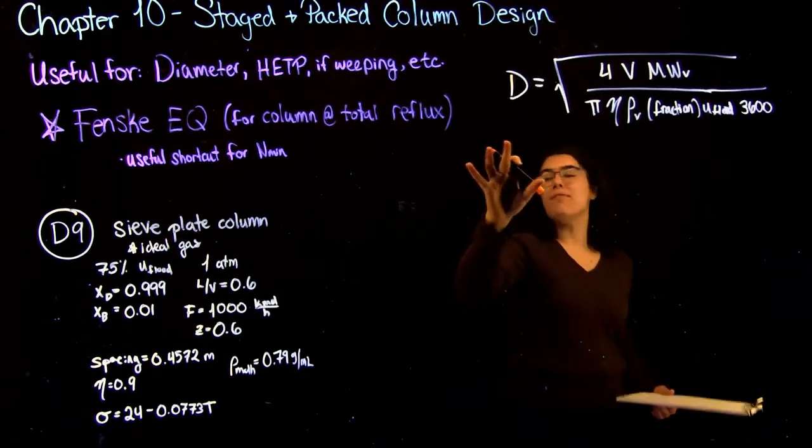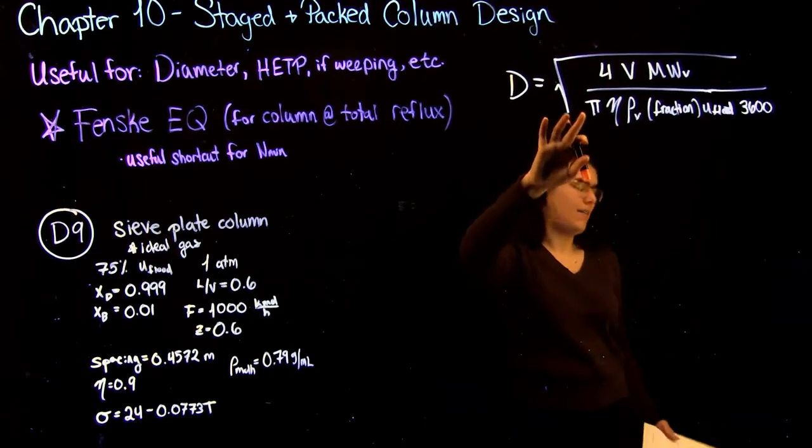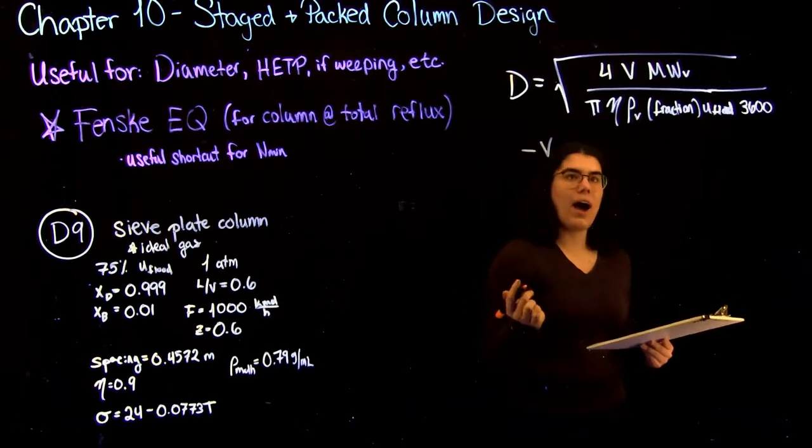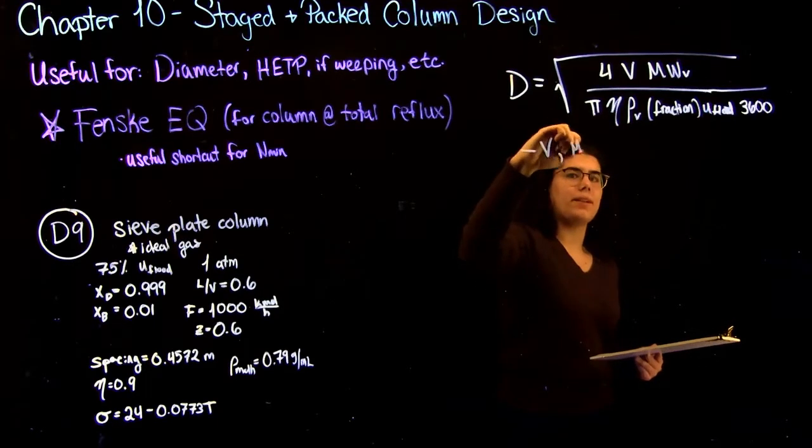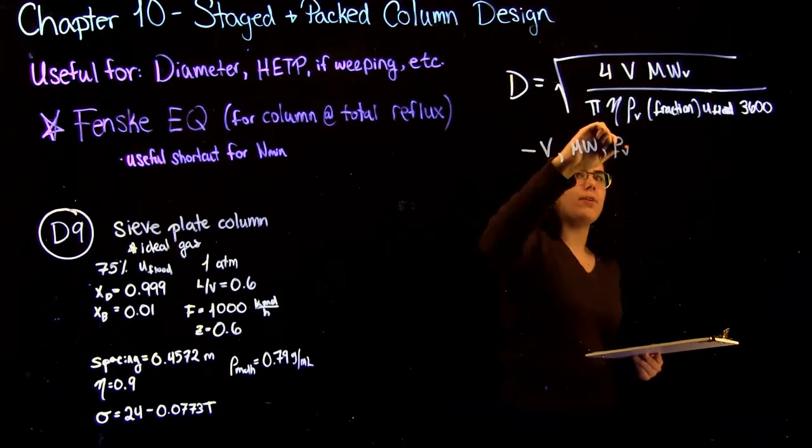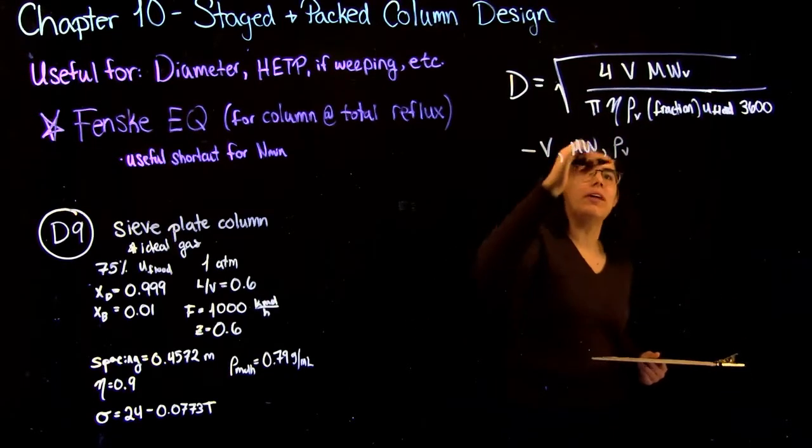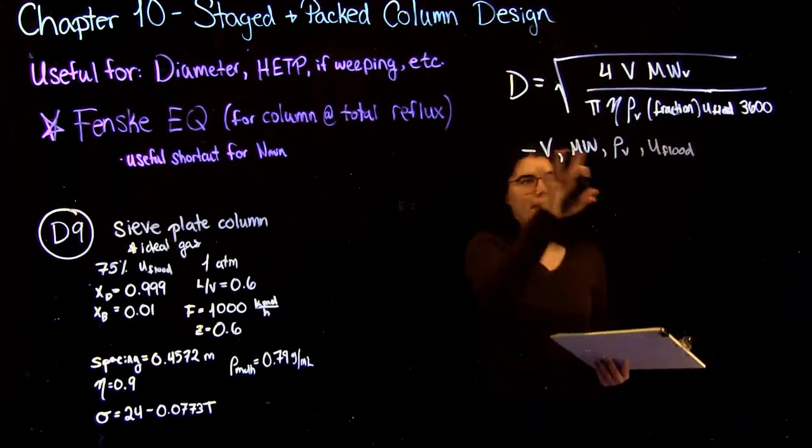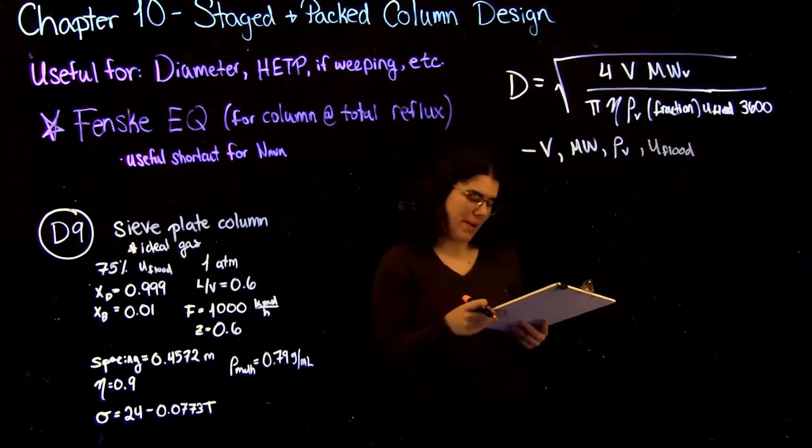So the first step, if we want to be able to calculate this diameter, is to see what in this equation we have and what we don't have. So one thing that we do not have is V. And we also don't have all of the properties of V - the molecular weight, because we don't yet know the composition, and we don't know the density. One other thing that we don't know is the flooding velocity.